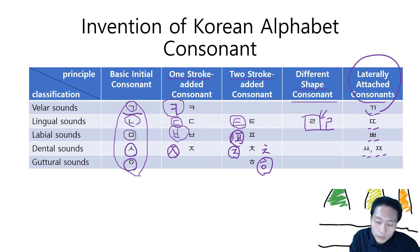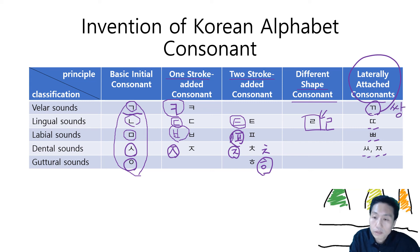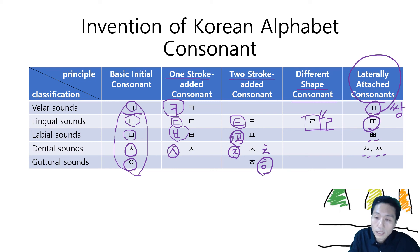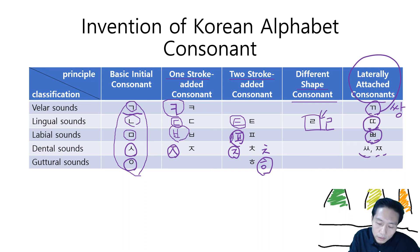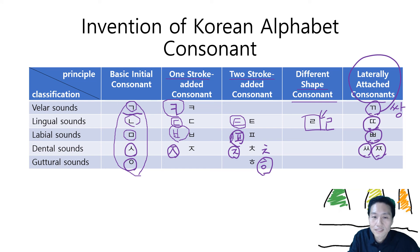We call this 쌍기역 — 쌍 means double. This one is called 쌍디귿, this is called 쌍비읍, this is called 쌍시옷, and this is called 쌍지읒. Thank you.